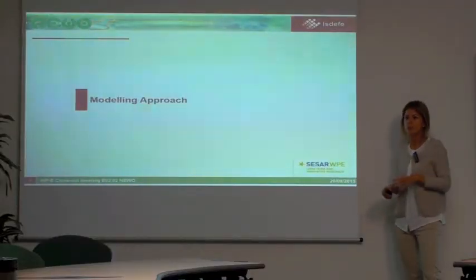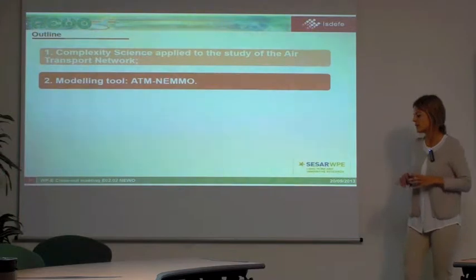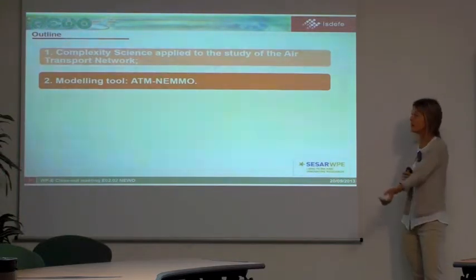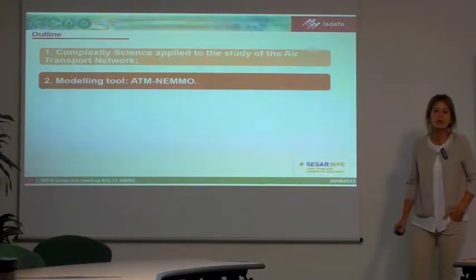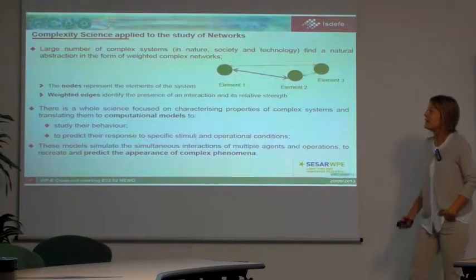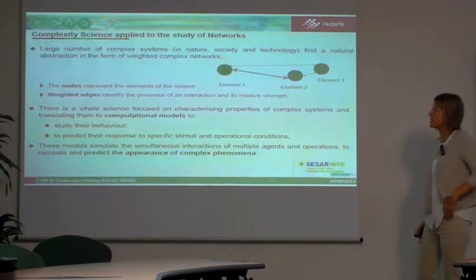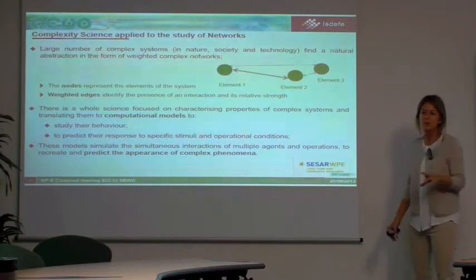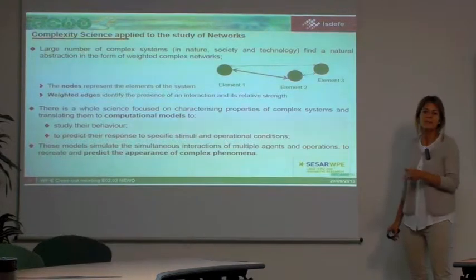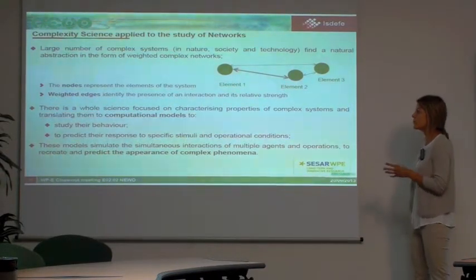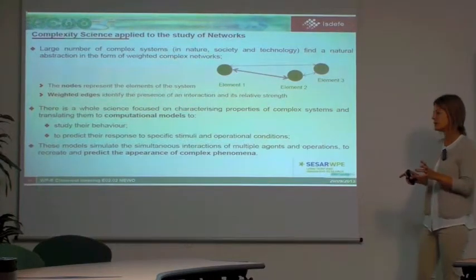Now I'll focus on the modeling approach, starting with complexity science to contextualize the ATM NEMO macro model. There are large numbers of complex systems in nature, technology, and society — like neural networks, social networks, and the World Wide Web — that find a natural abstraction as weighted complex networks, where nodes are the network elements and weighted edges identify interactions and the strength of links.